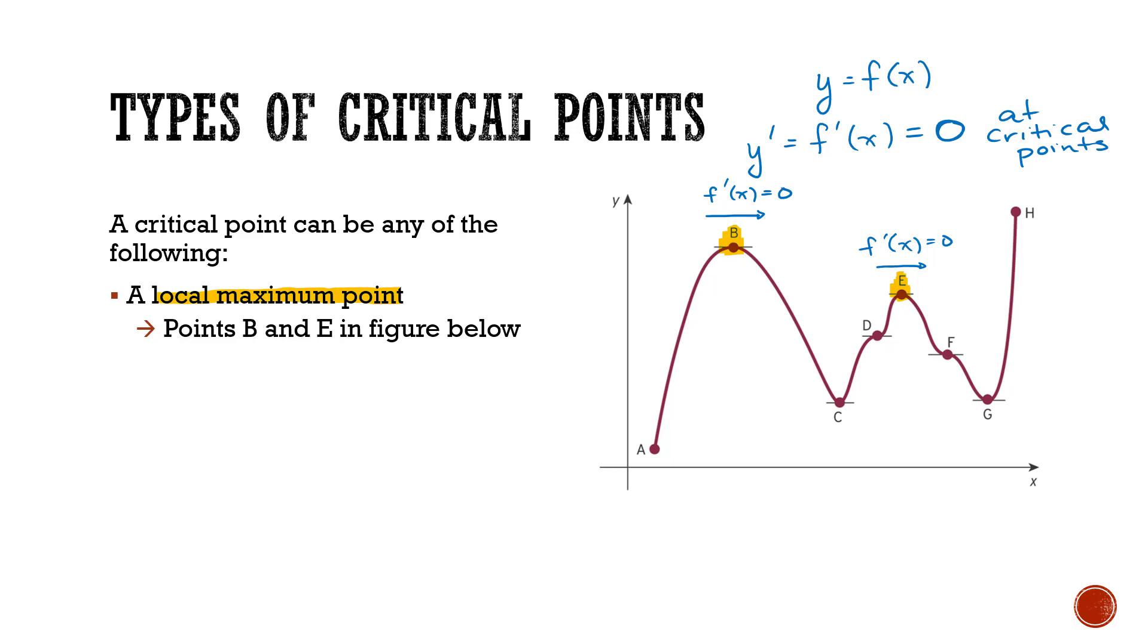Now that's not the only point where the slope is equal to zero. We also have our local minimums. So our local minimums, and those points are here at point C and at point G.